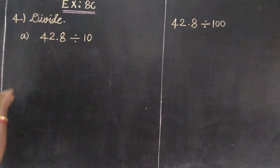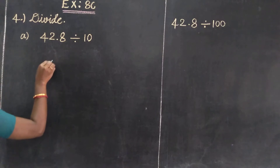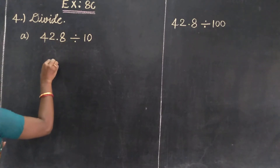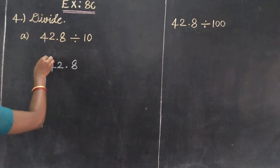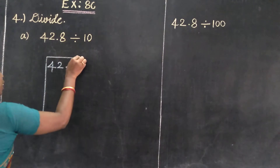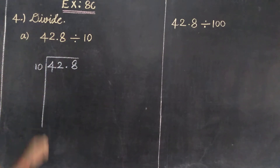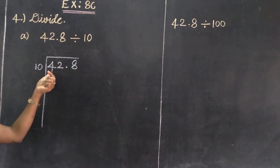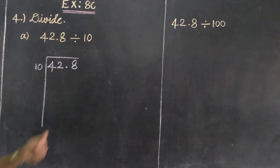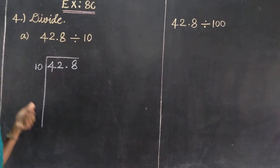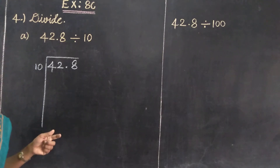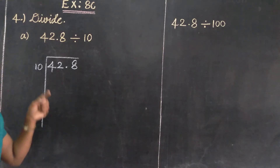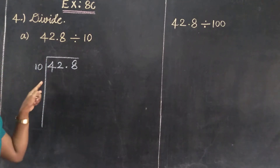First, divide 42.8 by 10. Consider 1 digit — 4 — it is not possible to divide by 10. So next consider 2 digits: 42. That is a 2-digit number, so 42 divided by 10 is possible. From the times table, 4 times 10 is 40, 5 times 10 is 50.